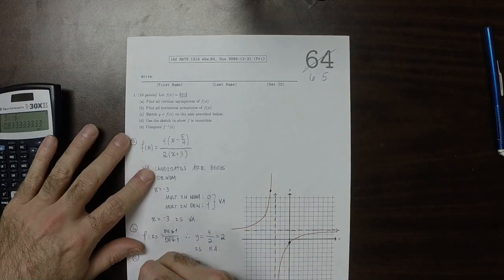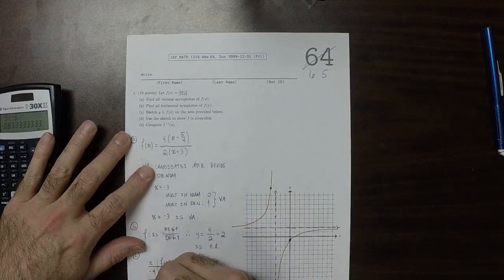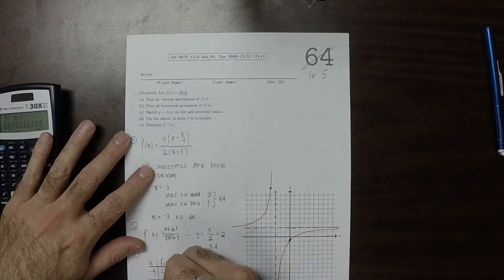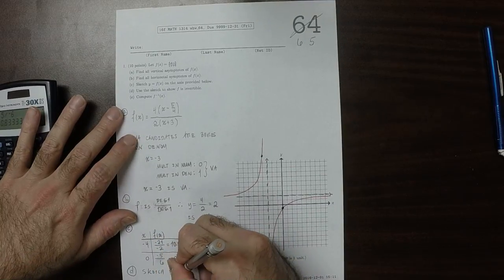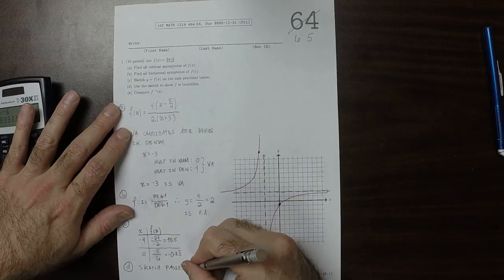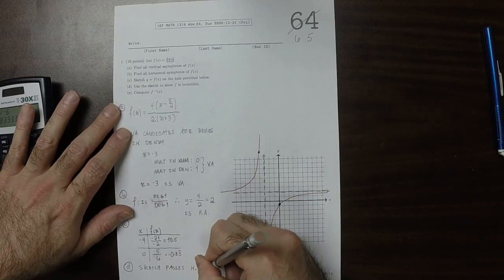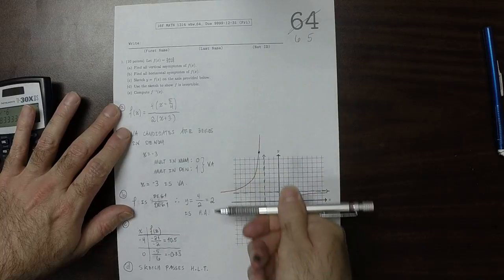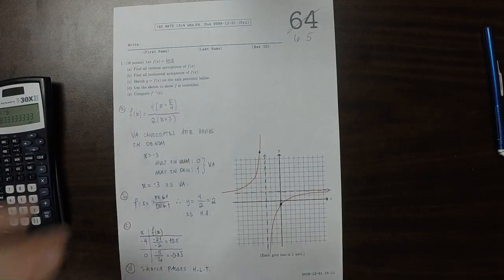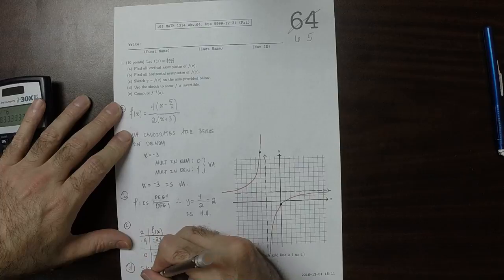So part D. The sketch passes the horizontal line test because every horizontal line crosses the red 0 or 1 times. And therefore, F is invertible.